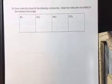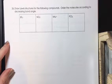For the last question on the review, we need to draw each of these Lewis structures and then put the molecules in order of decreasing bond angle.